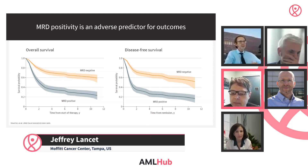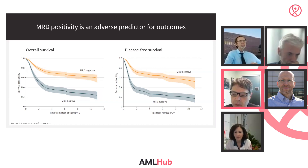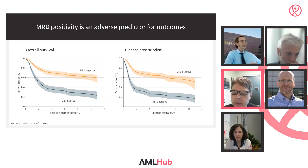I think we all realize that most things in AML these days are controversial, but one thing that is not controversial is the fact that MRD positivity is a bad thing and associates with worse prognosis when detected post-remission. This is data from a meta-analysis of over 80 studies in AML with over 11,000 patients and a variety of MRD detection methods. The overarching conclusion is that MRD positivity predicts for worse overall survival and disease-free survival.